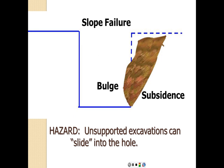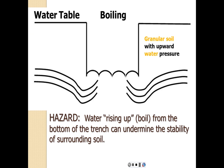How do cave-ins happen? The hazard is that unsupported excavations can slide into the hole — there's going to be lack of friction, so layers of soil slide on top of another layer and fill that void. Another hazard is what's called boiling — water rising up from the bottom of the trench, which can undermine the stability of the surrounding soil. With granular soil like sandy soil and upward water pressure, that can cause collapse.